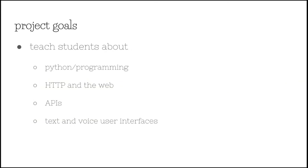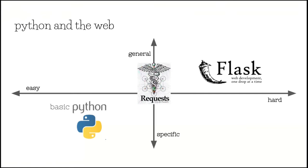So this is what the scale looked like for Python and the web. We started off with some basic Python — obviously Python can be general and hard, but we started off with the basics: print this and do something with this input.